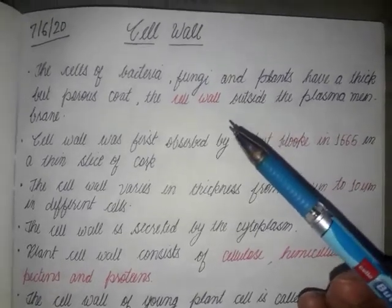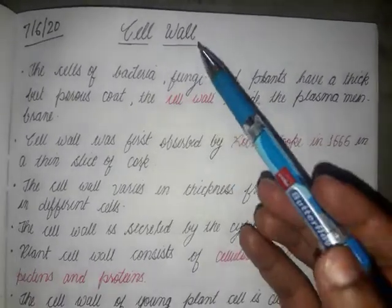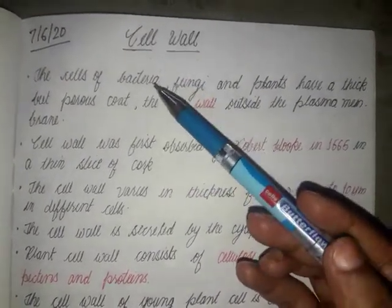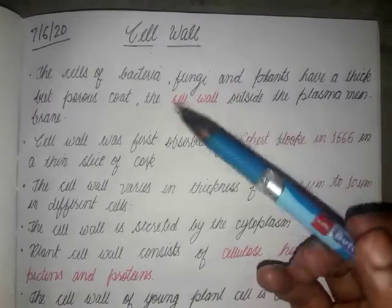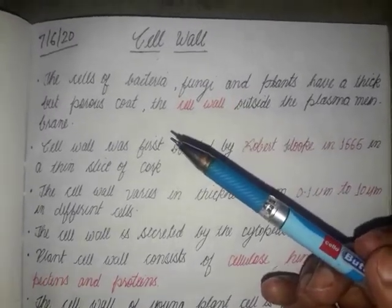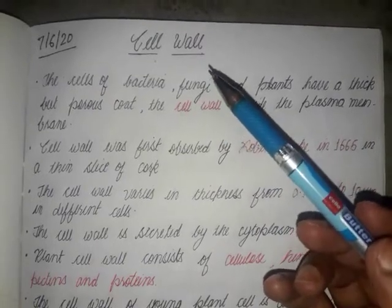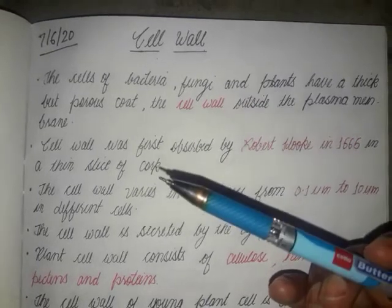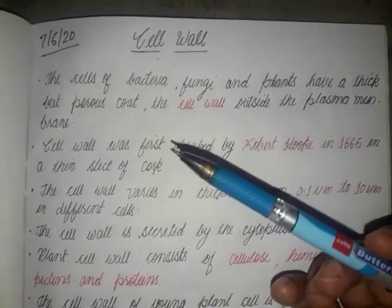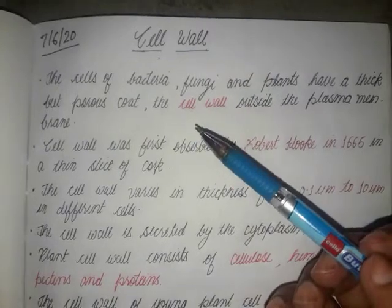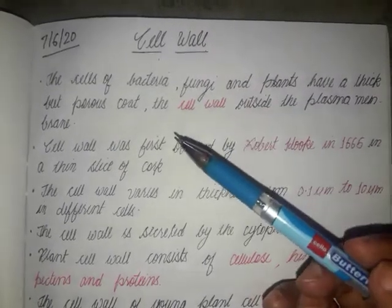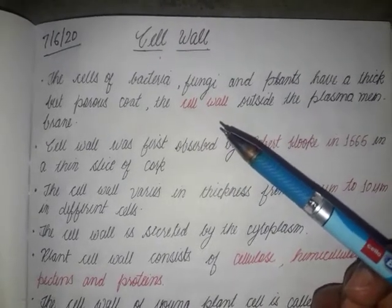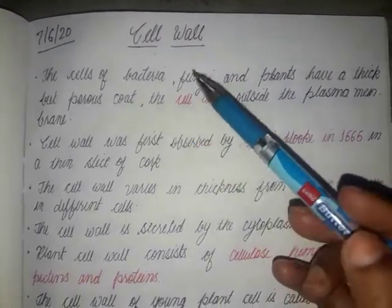Hello everyone, welcome back. Class 9, today we are going to discuss the cell wall. The cell wall is an additional structure in the case of the plant cell because it is absent in the case of the animal cell. Along with the plant cell, it is also found in bacteria and fungi. The protective coat outside the plasma membrane is known as the cell wall.